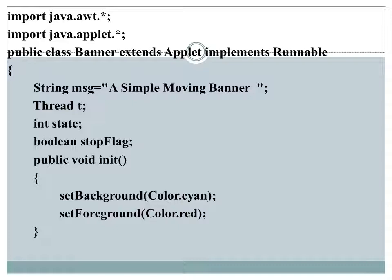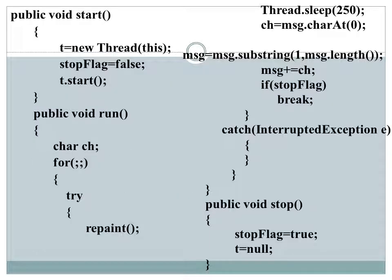We are displaying a moving banner message using a Thread t. In the init method we set the background and foreground color. Inside the start method we start that thread. There is a run method that belongs to the Runnable interface which we are overriding. The duty of the run method is to display the message and move it repeatedly from right to left.